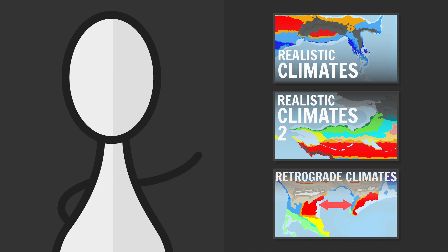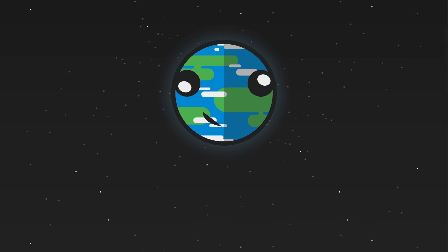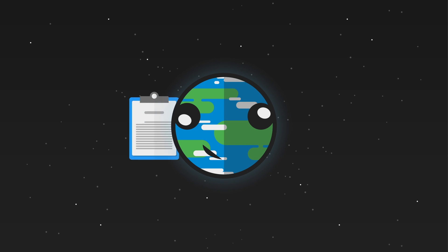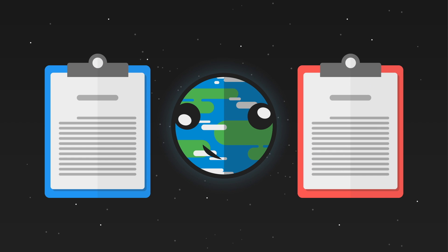Good morning Interweb, let's world build. Now that we know how to create realistic climates for Earth-like planets, let's mess with temperature, shall we? Two sets of climate guidelines — one for your cold terrestrial planets and one for your hot terrestrial planets — coming up.